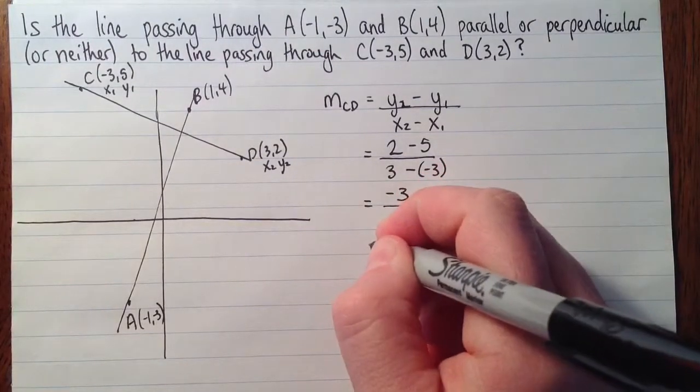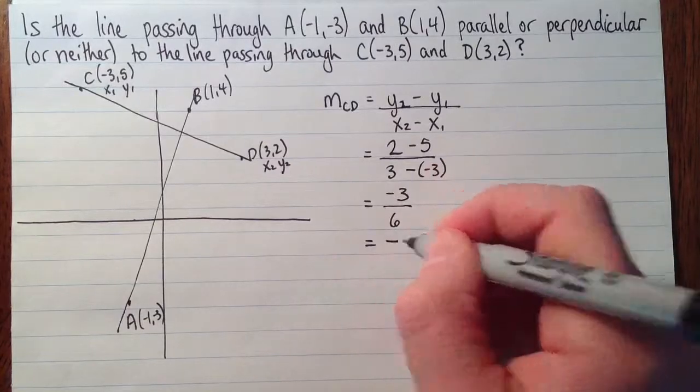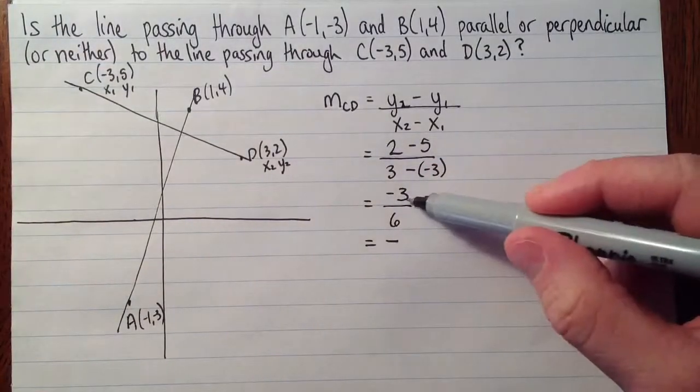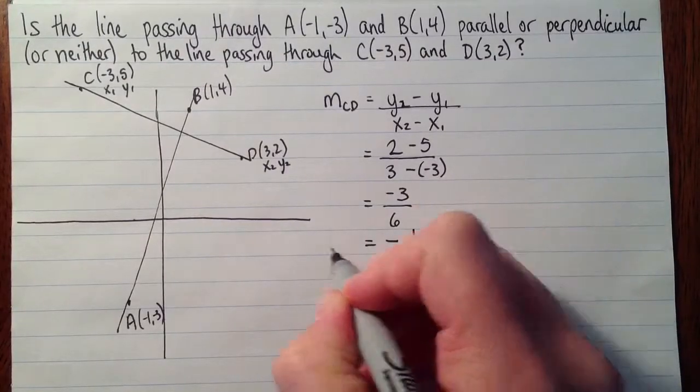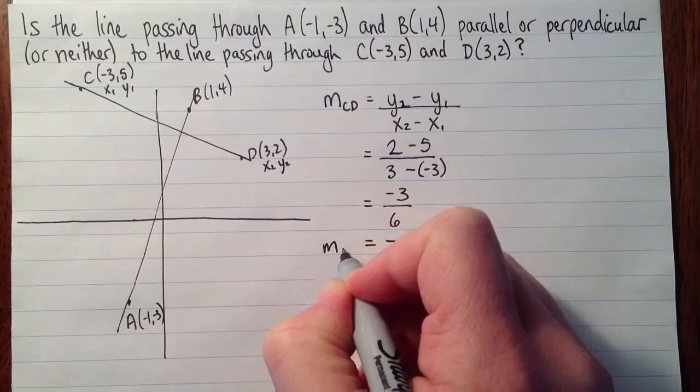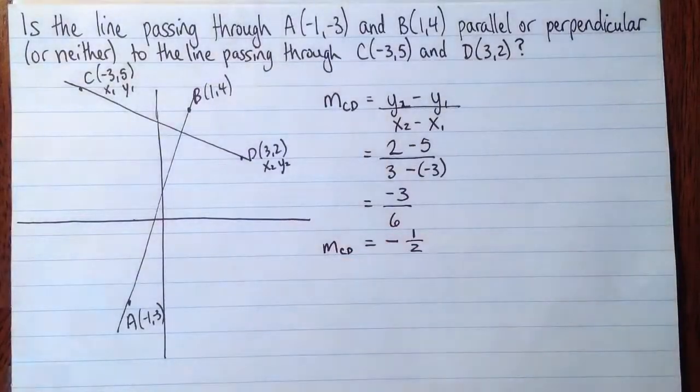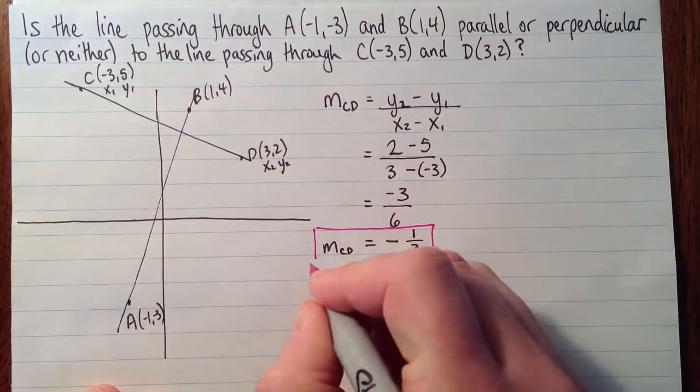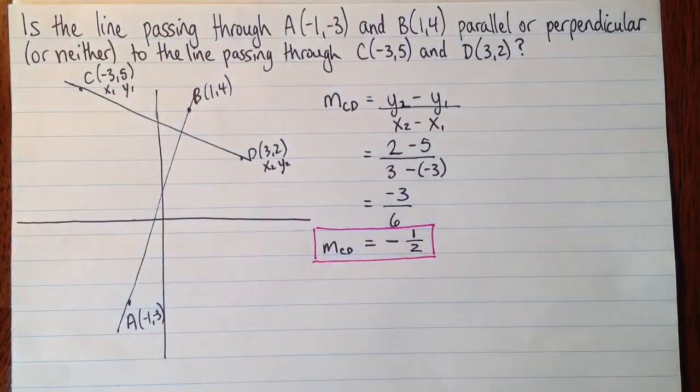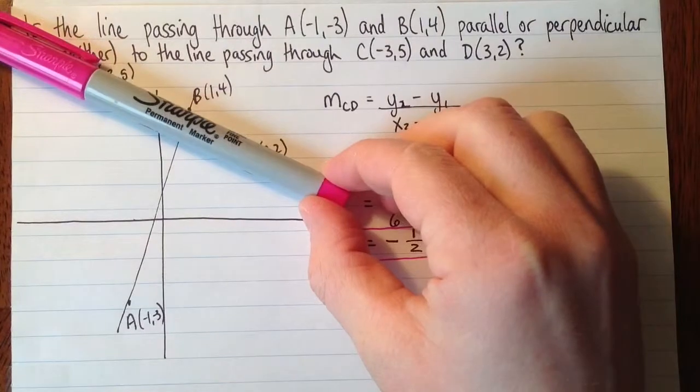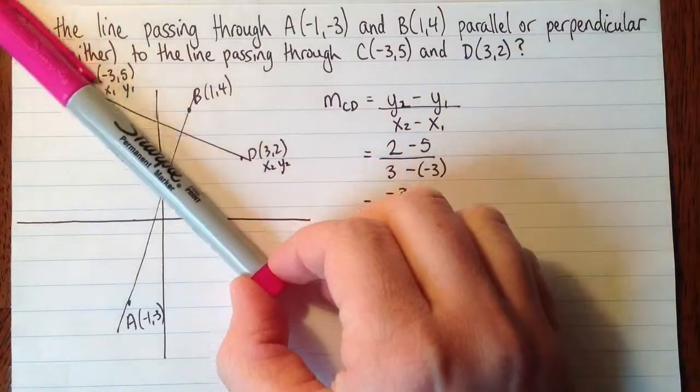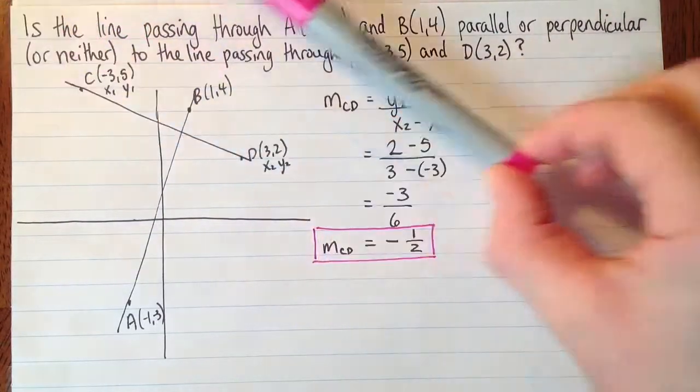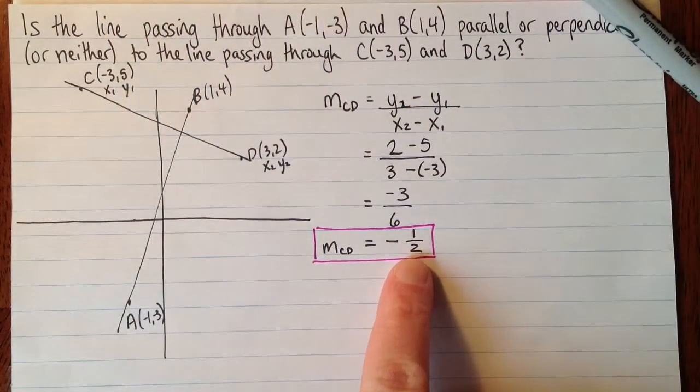Okay, now we'll simplify. So it's negative. The negative can be on the top or the bottom or in the front. And then 3 over 6 is 1/2. So m_CD is -1/2. So we should stop at this point and say, does this make sense? Does that slope look like -1/2? And it does. It's definitely a negative slope. And it's not very steep. If it was 45 degrees, it would be a slope of 1. And it's less steep than that. So a number that's closer to 0. That makes sense.